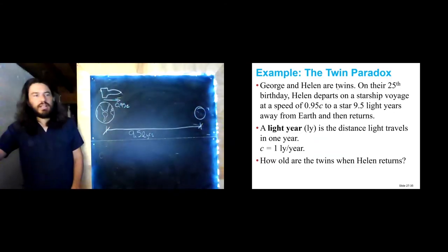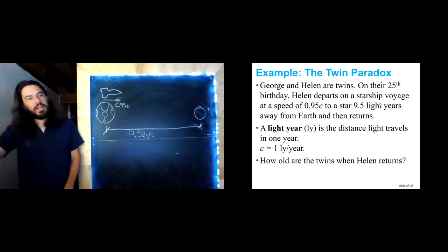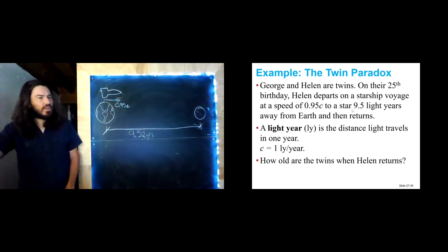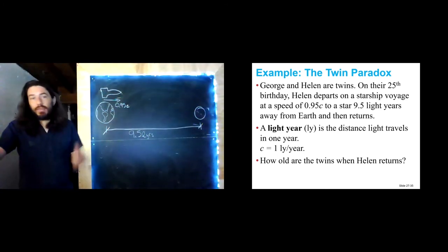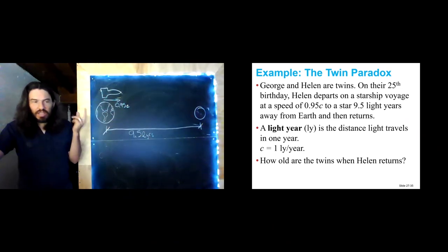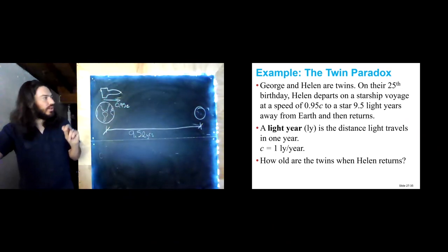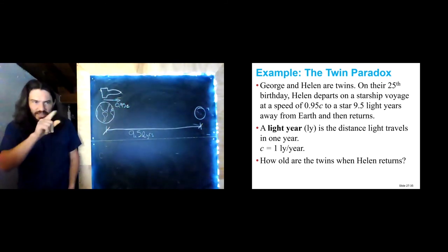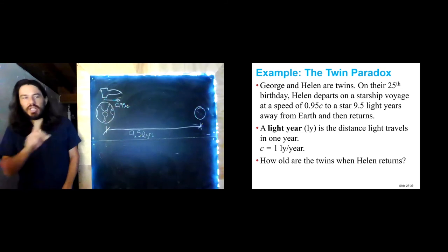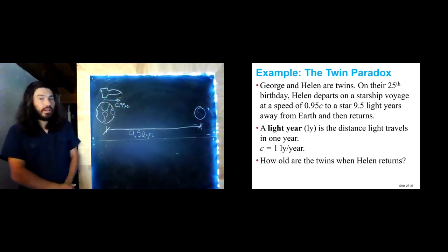We've got George and Helen — they're twins. On their 25th birthday, Helen departs on a starship voyage at 0.95C to a star 9.5 light years away from Earth. Then she realizes she forgot her phone and immediately returns. We're going to neglect the turnaround time and assume she slows down and turns around instantaneously. How old are the twins when Helen returns?